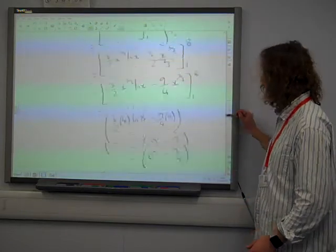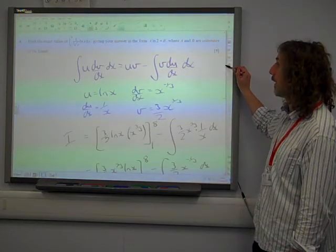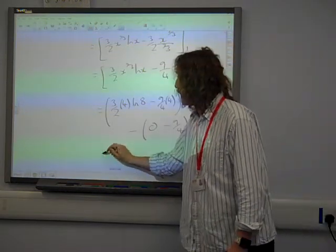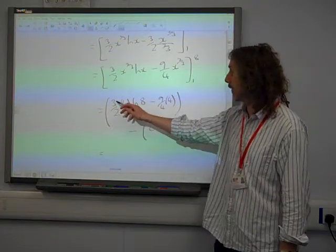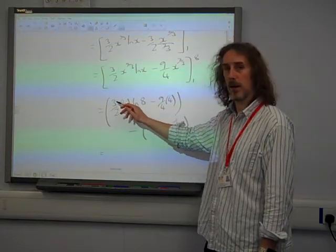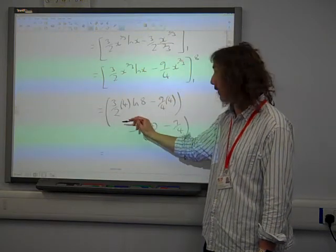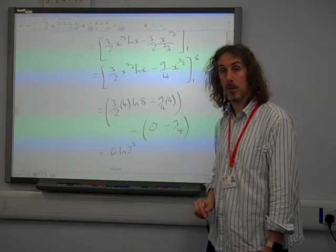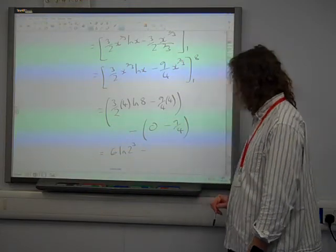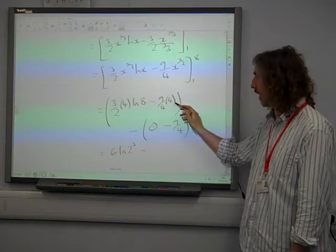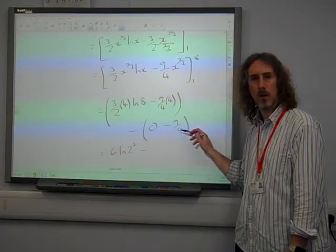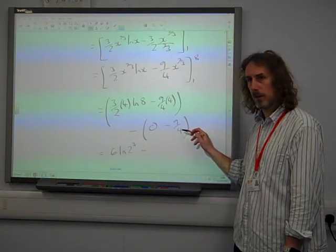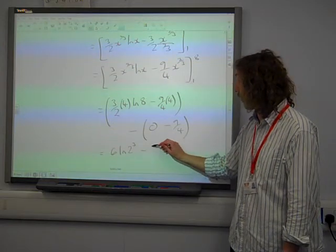And now we need to get it in the right format. The question did say A*ln2 plus B, so we need it in terms of ln2. We've got that's 3 times 4 divided by 2 is going to be 6 times ln2 cubed. And then what have we got here, we've got 9 minus 9 plus 9 over 4, so that's minus 36 over 4, so minus 27 over 4.